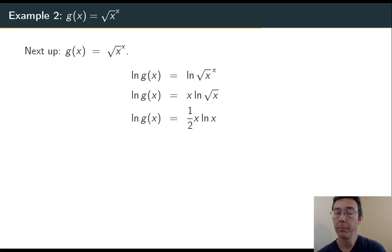Now differentiate both sides. Remember on the left hand side, to use the chain rule, I differentiate the natural log to get 1 over g of x, and I multiply by the derivative of g of x, the inside function, so g prime over g.